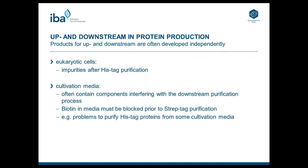One reason is that there are components in cultivation media that interfere with the downstream purification process. For example, biotin in the media must be blocked in order to enable Streptactin purification, which is not a really big problem because we developed a BioLock blocking solution. However, because biotin is very cheap, some mammalian media contain high concentrations of biotin, and therefore you need much BioLock solution, making the purification process more expensive.